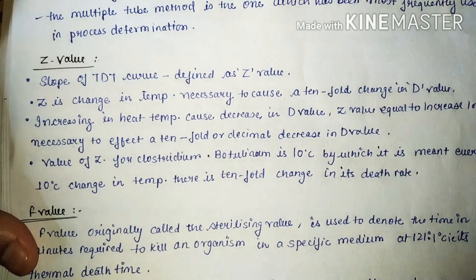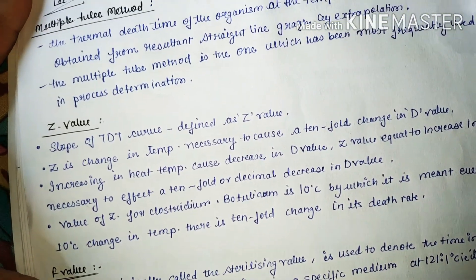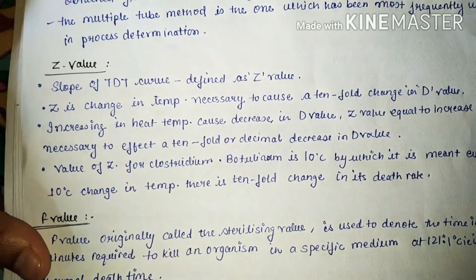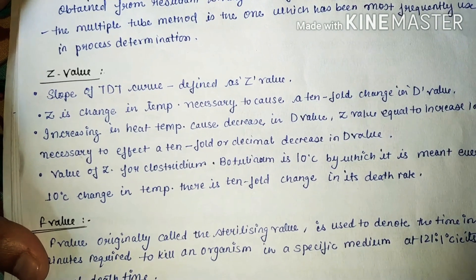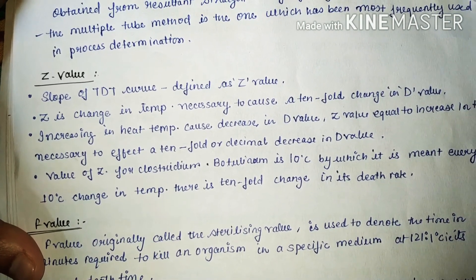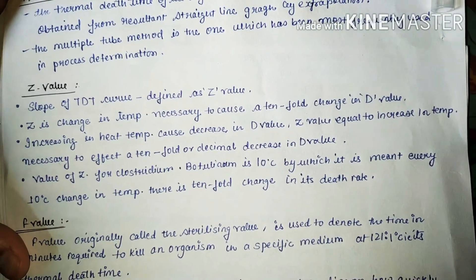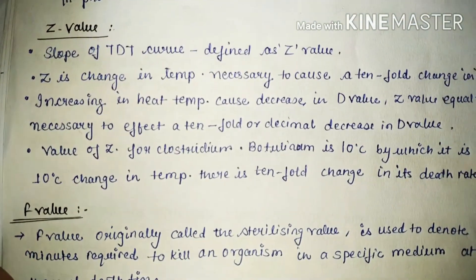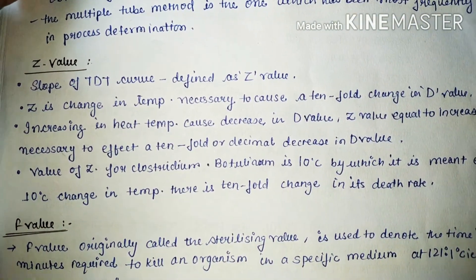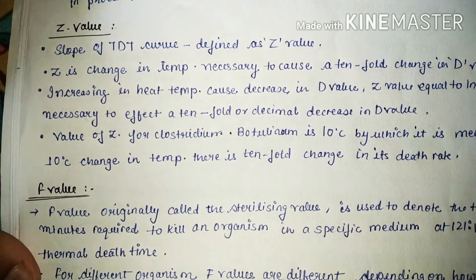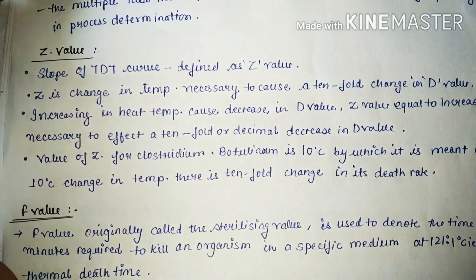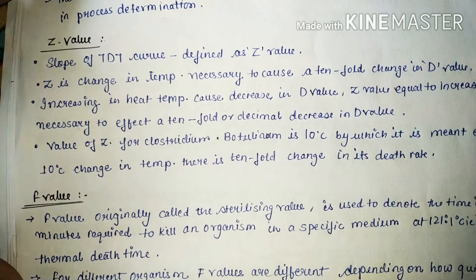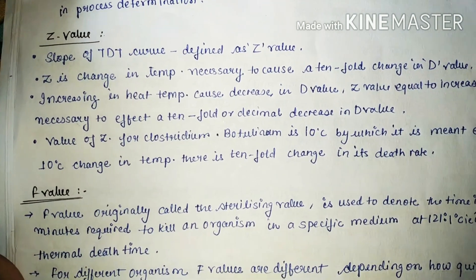Increasing heat temperature causes a decrease in D value — when heat temperature increases, D value decreases. The Z value equals the increase in temperature necessary to effect a tenfold or decimal increase in D value. The value of Z for Clostridium botulinum is 10 degrees Celsius, by which it is meant that a 10 degree Celsius change in temperature results in a tenfold change in death rate.